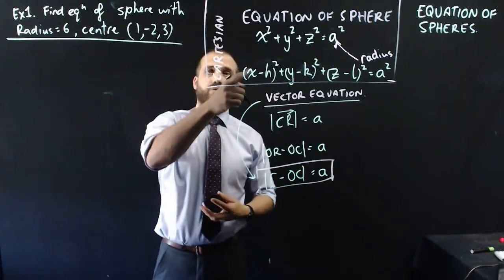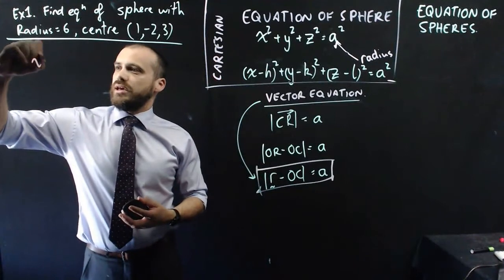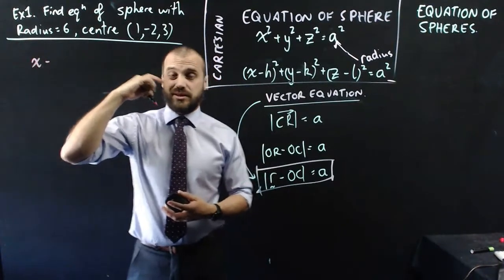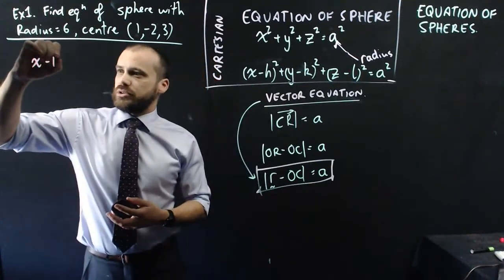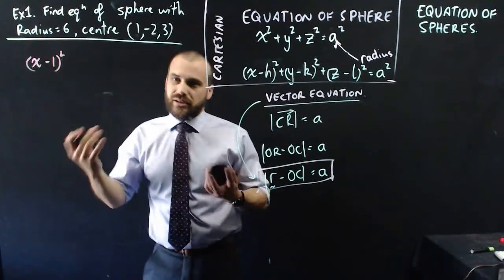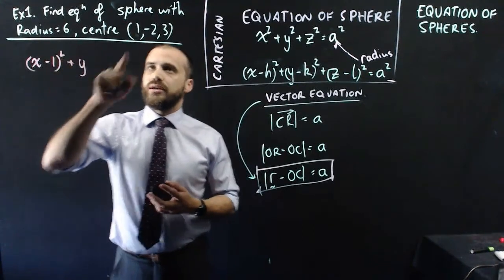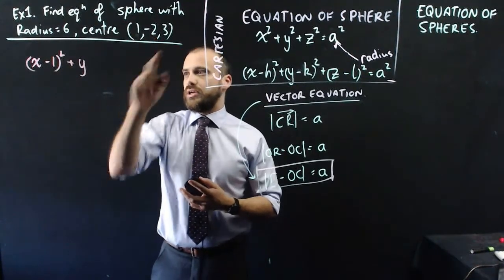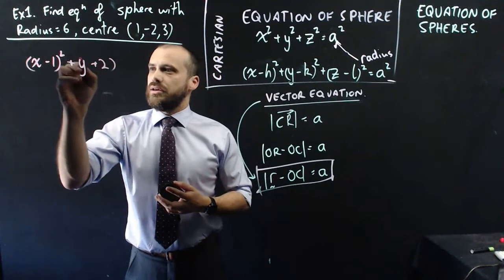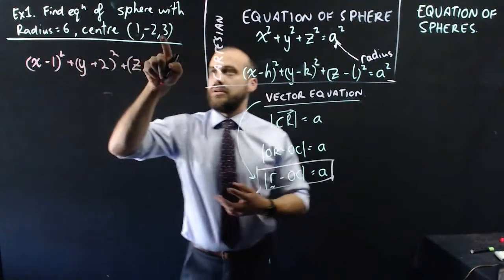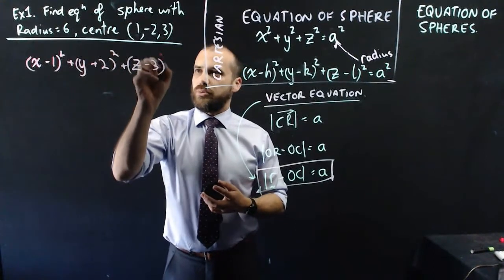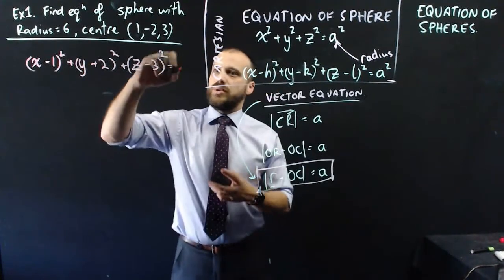Let's do the Cartesian one first. So we want x minus something. It's positive 1x, so I need to do minus 1. I need to do the opposite of what you might think. Plus y, I need to do minus 2, so I need to add 2 there, squared. Plus z, 3, so I need to do minus 3, opposite of what I might expect. And then I need 6 squared.